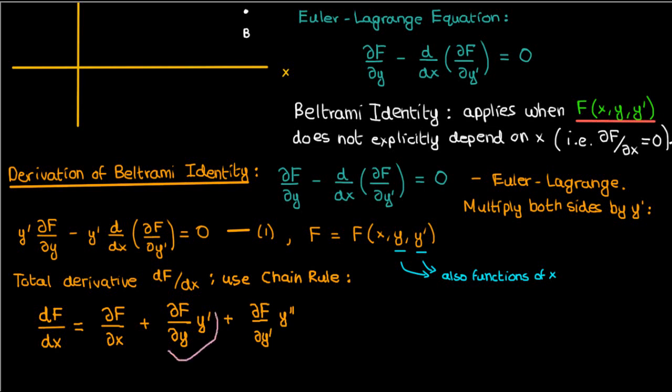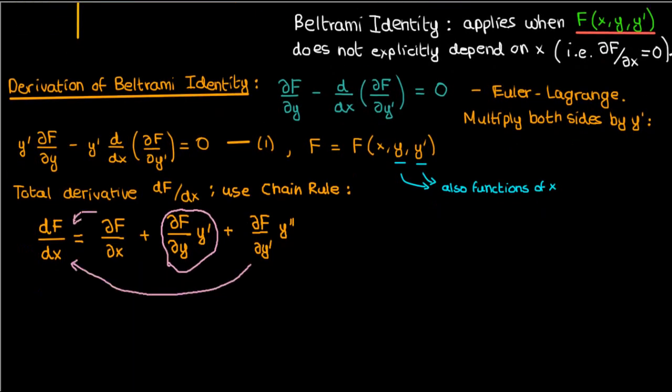Let's go ahead and isolate the second term, this partial F partial y times y prime. Let's isolate the second term and move everything else to the other side of the equation. The resulting expression I'm going to call equation 2.